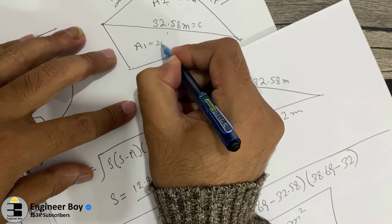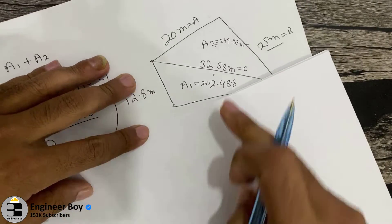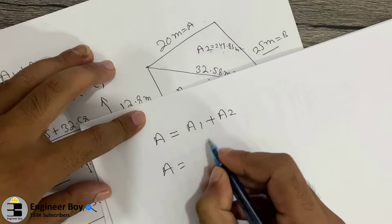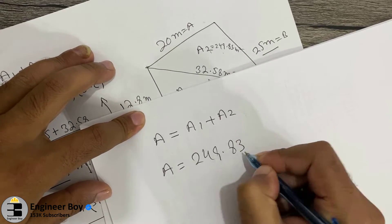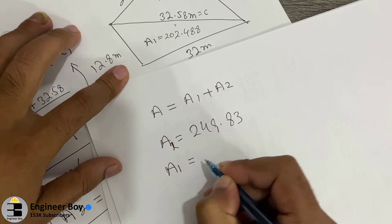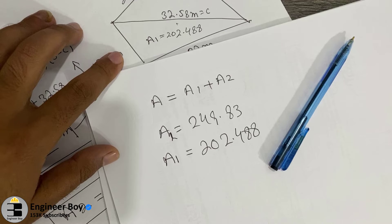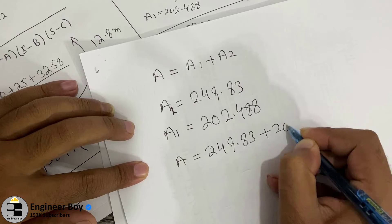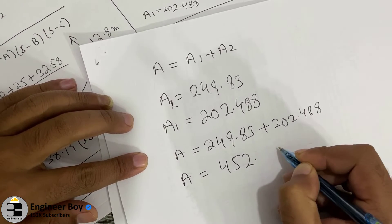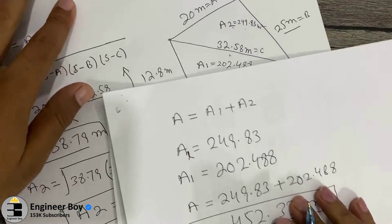Now the total area equals Area 1 plus Area 2. Area 2 is 249.83 square meters and Area 1 is 202.488 square meters. So the total area = 249.83 + 202.488 = 452.32 square meters. That is the property's area.